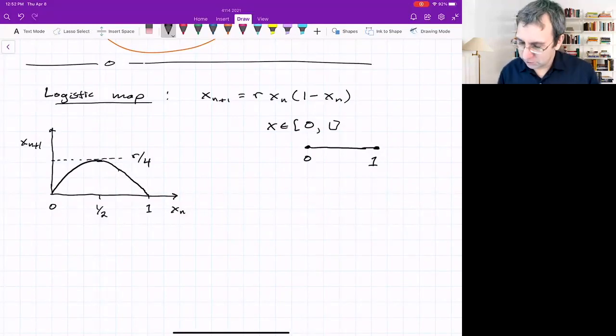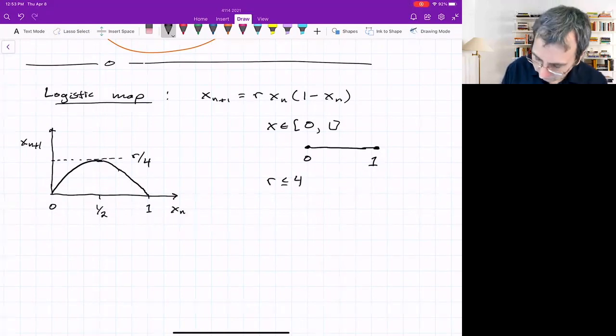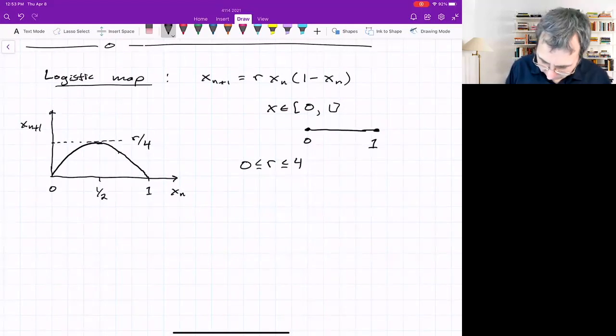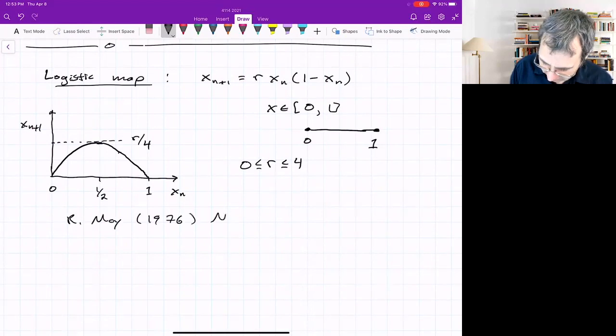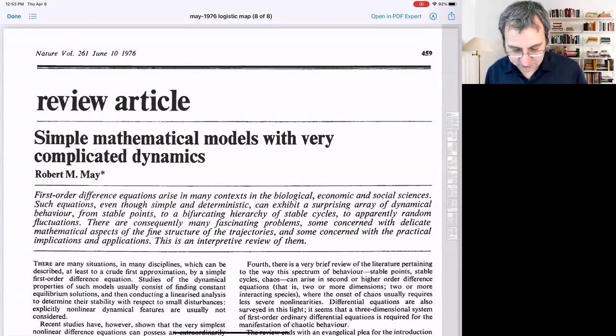We want the map to go from [0,1] to [0,1], so X_{n+1} should be somewhere inside the unit interval. For that to happen, we need this peak to be 1 or below. So it's conventional to let the parameter be less than 4 but greater than 0. Physically, this represents the reproductive capacity of the population.